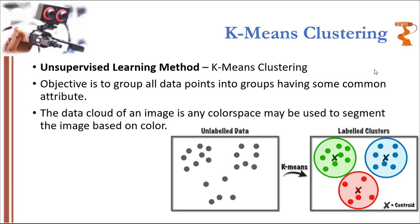In the same way, color images may also be segmented into regions if there are distinct colored objects present in the image. I will show you how you can achieve this segmentation in MATLAB in a bit. So let us first understand how the k-means clustering algorithm works and then we will move on to its implementation on a colored image.